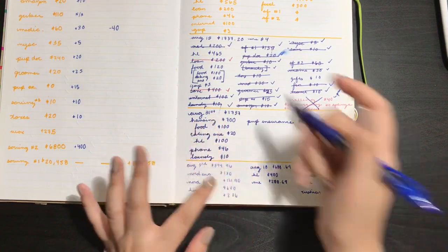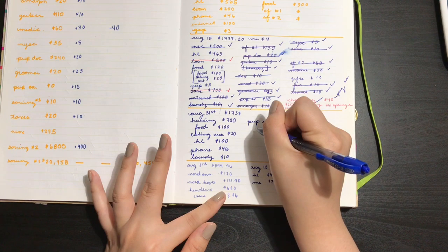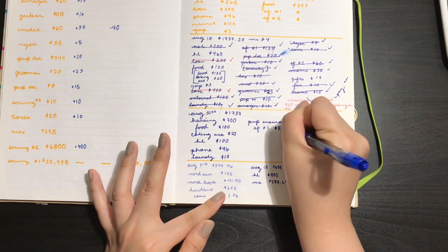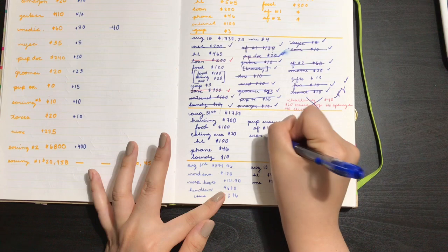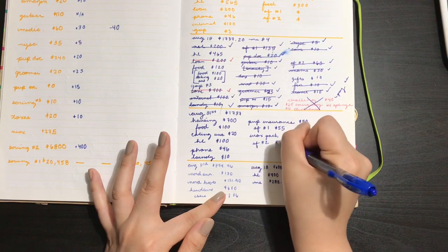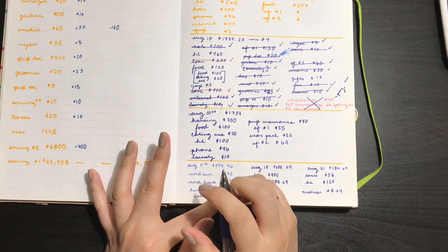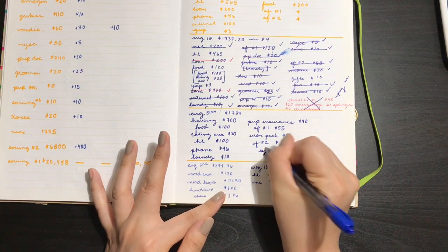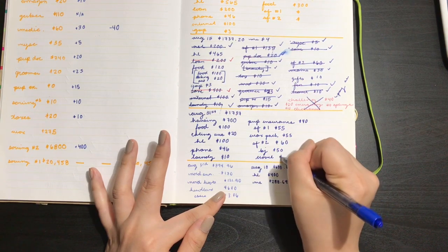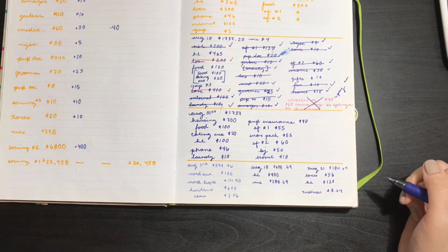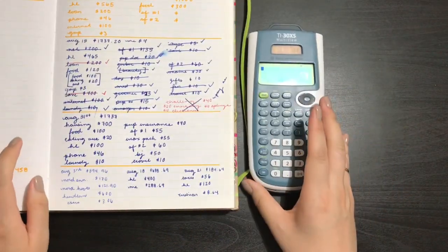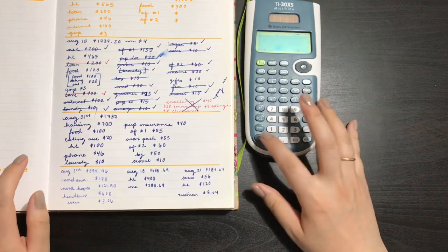My sinking fund number one is going to get $55, and that's just my wax package. Then, I have my sinking funds number two, and that gets $60. For sinking funds number two, that's my BJ's of $50 and my travel of $10. So that makes a total of $60.